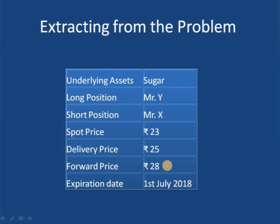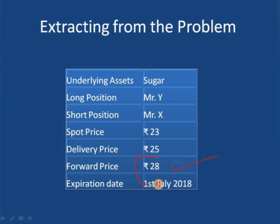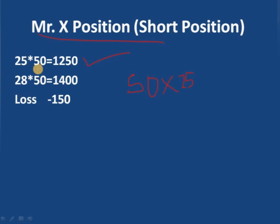Let us imagine that on the date of expiry the forward price in the market is 28 rupees. Let us calculate the payoff profile of X and Y — seller and buyer. The forward price at expiry is 28 rupees. Mr. Y agreed to buy 50 kg of sugar at 25 rupees per kg, so the agreed price gives a contract value of 1,250 rupees. This is the same obligated amount for both Mr. X and Y — according to the contract obligation, they must exercise the contract at 25 rupees per kg for 50 kg.